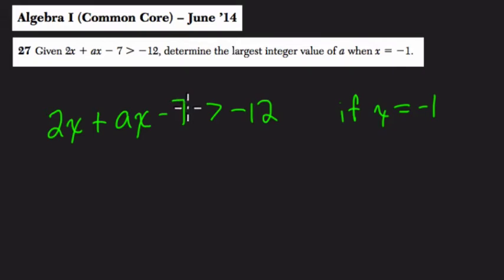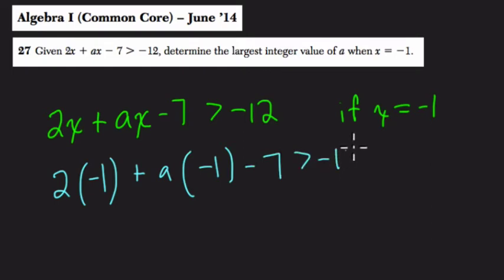So we're looking at inequality, so it's not necessarily what a equals, but what's larger than or smaller than, depending on the setup of the problem. So the first thing I would do is just plug in the value of x that they give us here. So it's 2 times x, negative 1, plus a times negative 1, minus 7 is greater than negative 12.